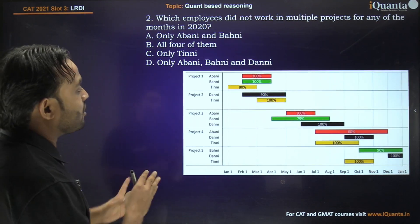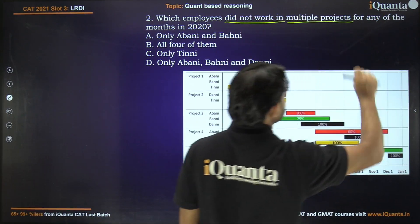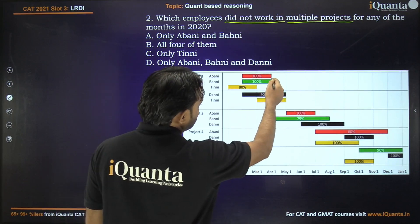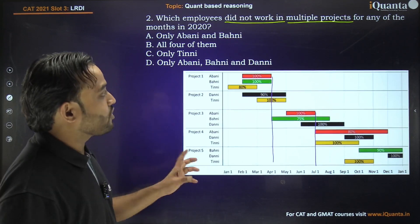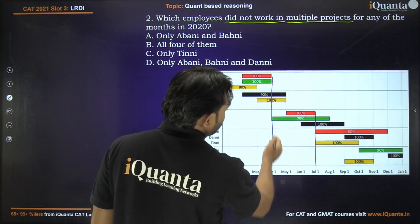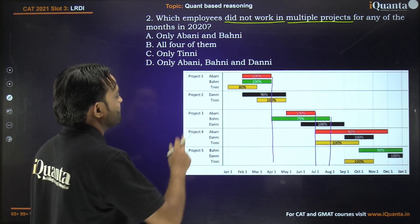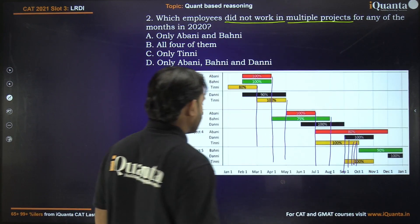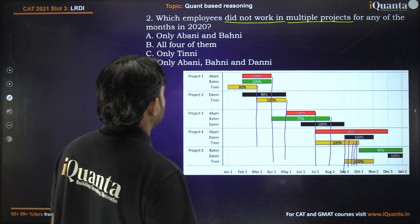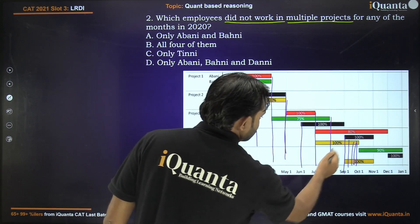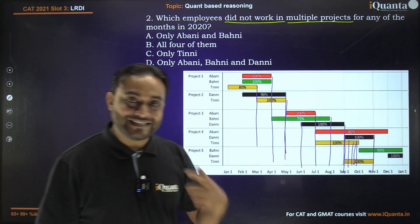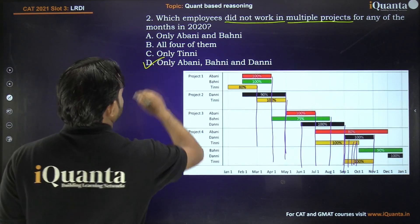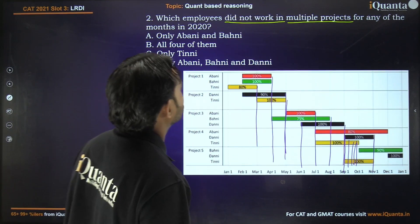Second question: which employees did not work in multiple projects for any of the months in 2020? For Abani, there is no overlapping, so Abani did not work in multiple projects. For Bahani, there is also no overlapping, so Bahani also did not work in multiple projects. For Tinni, there is overlap — Tinni is working in projects 4 and 5 simultaneously. For Dhani, there is no overlapping at all. So only Tinni worked in multiple projects, and the answer is option D — only Abani, Bahani, and Dhani did not work in multiple projects.